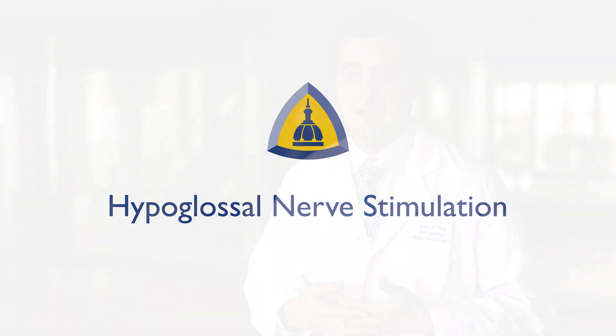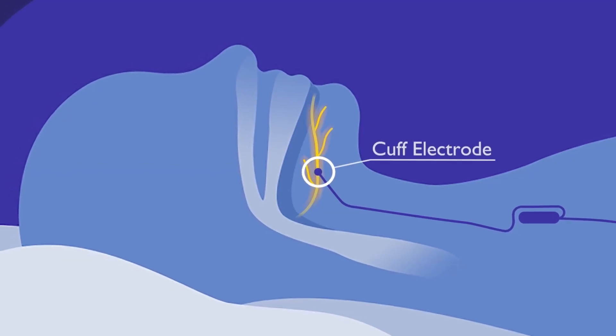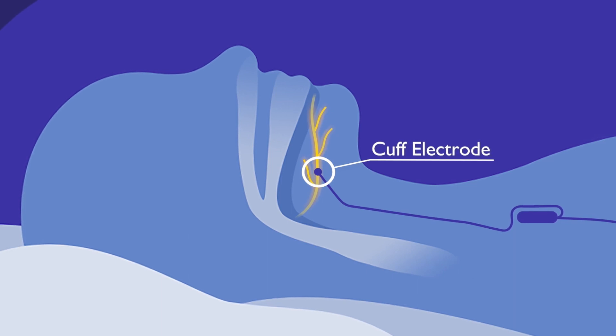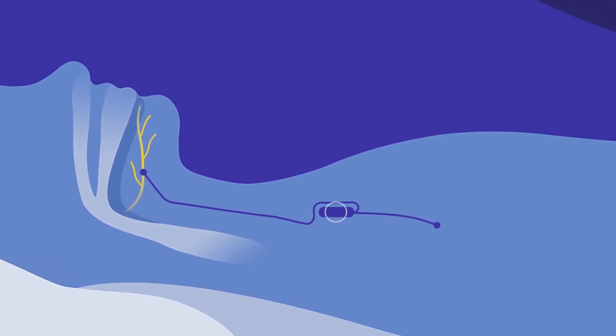Hypoglossal nerve stimulation is a pacemaker for the tongue. When a patient undergoes this surgery, we implant a cuff electrode around the hypoglossal nerve, not just the whole nerve but very specific branches that control the ability of the tongue to move out of the mouth.